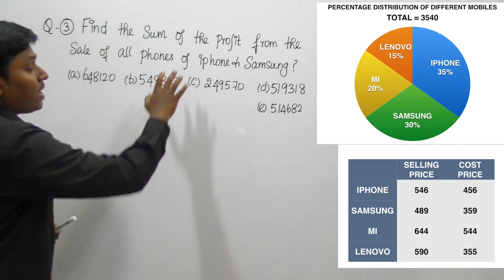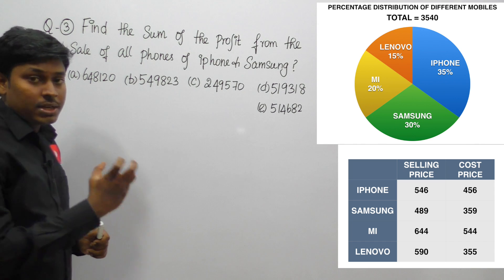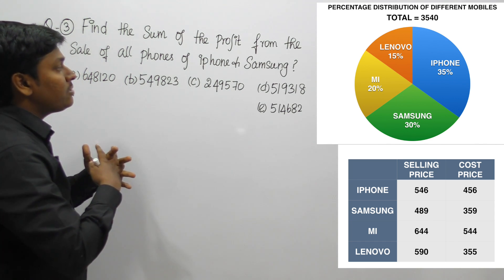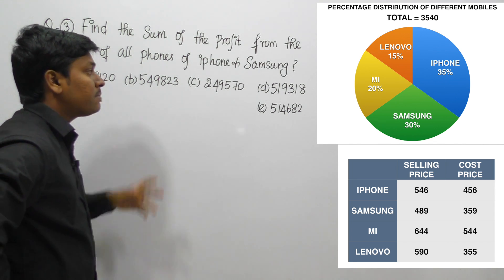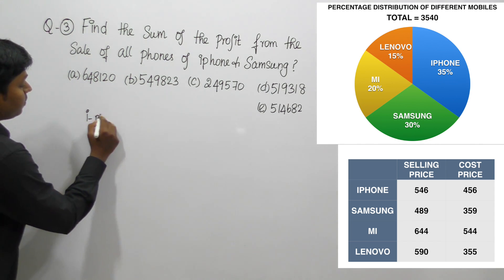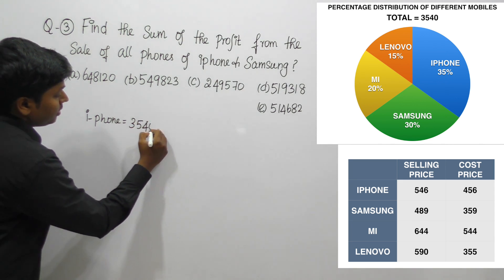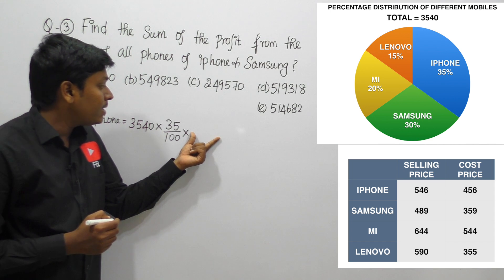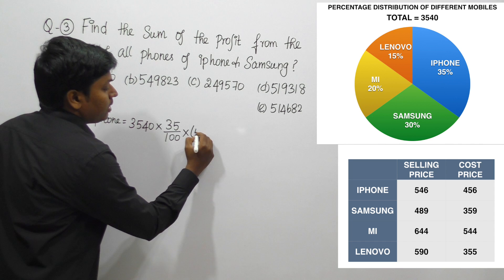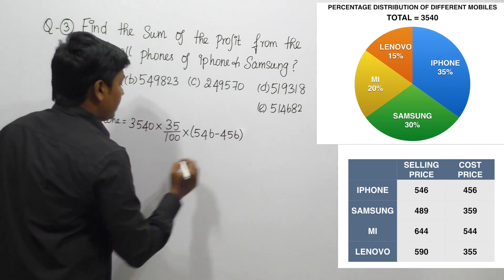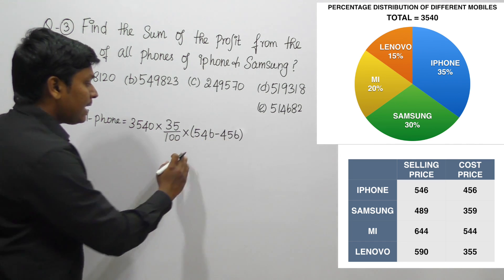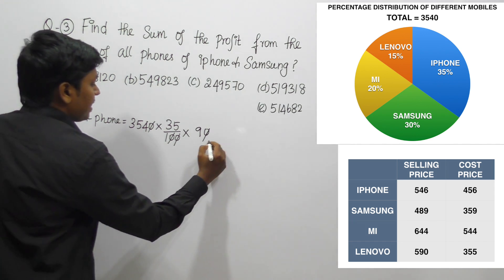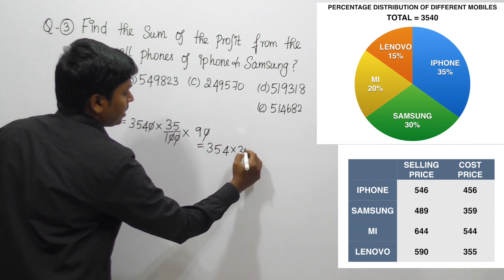Question number three: find the sum of profits from selling all phones of iPhone and Samsung. We need to find the profit from iPhone and Samsung separately. Out of 3540, iPhones are 35%. Profit per iPhone = selling price minus cost price = 546 − 456 = 90. So iPhone profit = 3540 × 35/100 × 90 = 354 × 35 × 9.